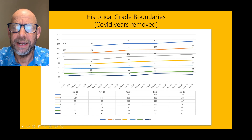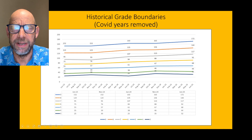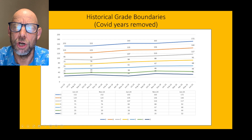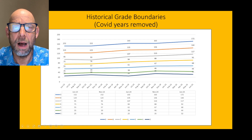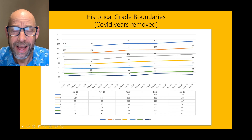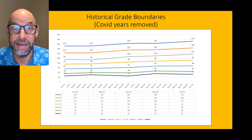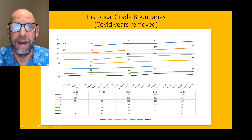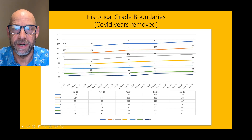So, to get a grade 9, I reckon you'll need about 172 out of 200. That means you can afford to lose only 28 marks across both papers — that is a tremendously high bar to reach. You would be looking at getting an average of 86% on the two papers. Well, you'd be well-deserving of a 9.